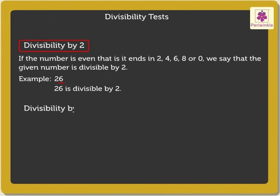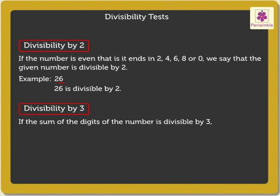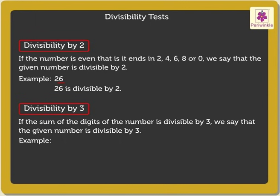Divisibility by 3. If the sum of the digits of the number is divisible by 3, we say that the given number is divisible by 3. For example, look at the number 384. When we add up all the digits, that is, 3 plus 8 plus 4, we get the sum as 15. We know that 15 is divisible by 3. Thus, we conclude that 384 is divisible by 3.